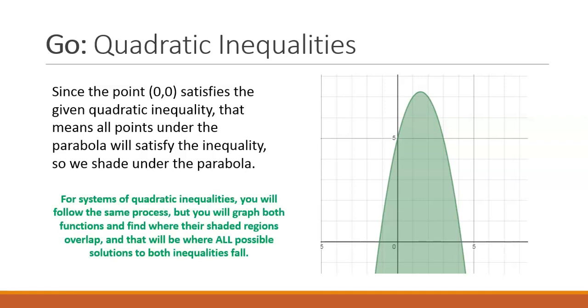For systems of quadratic inequalities you will follow the same process but you will graph both functions and find where their shaded regions overlap and that will be where all possible solutions to both inequalities fall.